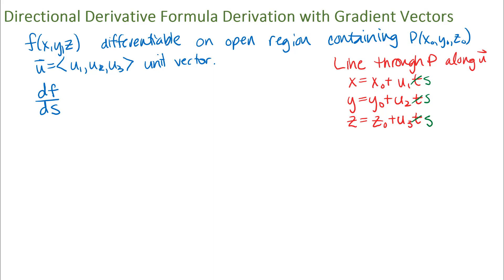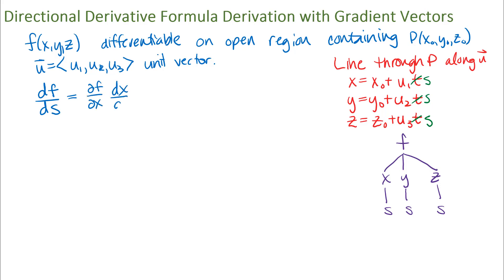We're just going to use the chain rule to come up with this directional derivative calculation formula. Since I have f as a function of x, y, and z, and x, y, and z are now all written in terms of s, I've drawn a chain rule diagram. We assumed f was differentiable and clearly the equations for x, y, and z are differentiable. So I can find dx/ds, dy/ds, and dz/ds. The chain rule gives: df/ds equals (∂f/∂x)(dx/ds) plus (∂f/∂y)(dy/ds) plus (∂f/∂z)(dz/ds).